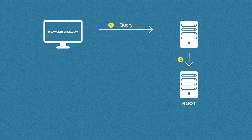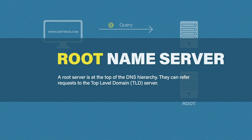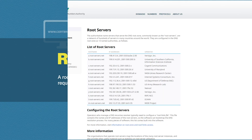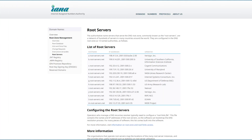The DNS recursive resolver will most likely be managed by your ISP, though you can change this to a third party such as Google DNS, or even run your own internal DNS resolver. Once the DNS resolver receives your query it checks its cache. If it can't find an entry for certbros.com it will send a request to another server called a root server. A root server is at the top of the DNS hierarchy and is the first step in resolving certbros.com to an IP address. There are hundreds of root servers around the world, but they all use one of 13 IP addresses.